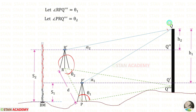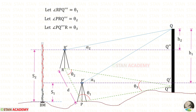We measure the horizontal angle at station P between station R and the top of the tower Q, keeping that angle as theta 1. From station R we measure the horizontal angle theta 2 between station P and the top of the tower. The remaining angle in the triangle at Q triple dash is kept as theta 3.